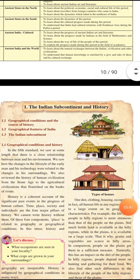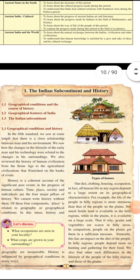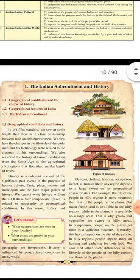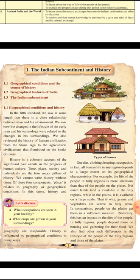See this — types of houses. According to the climate and geographical area, people make their houses. Our diet, clothing, housing, and occupation — in fact, all human life in any region depends to a large extent on its geographical characteristics.